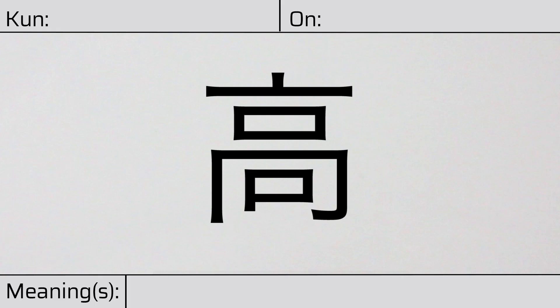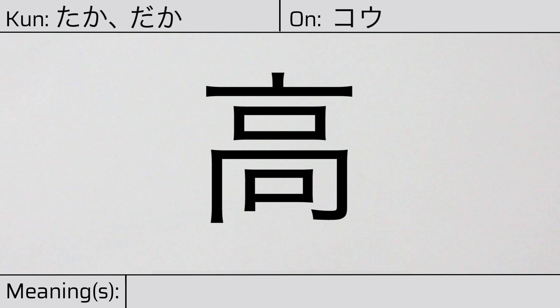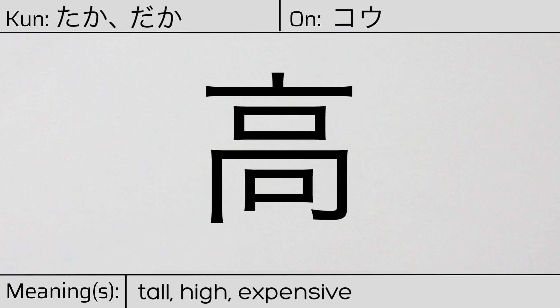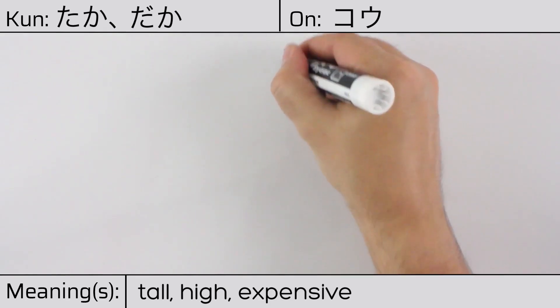Welcome to this lesson on Japanese kanji. Today, we'll be discussing this character. This kanji has kunyomi or Japanese readings of taka or daka, and it has an onyomi or Chinese reading of kau. This character has the meanings tall, high, or expensive. Here is the stroke order.